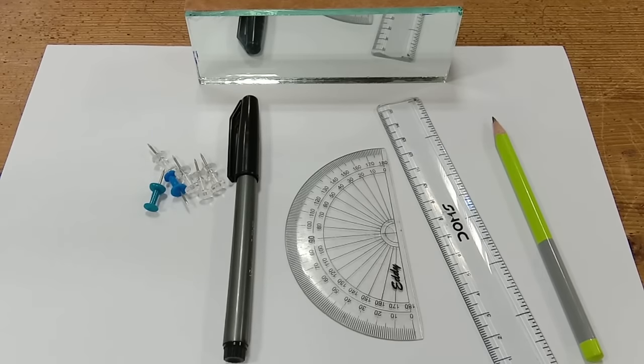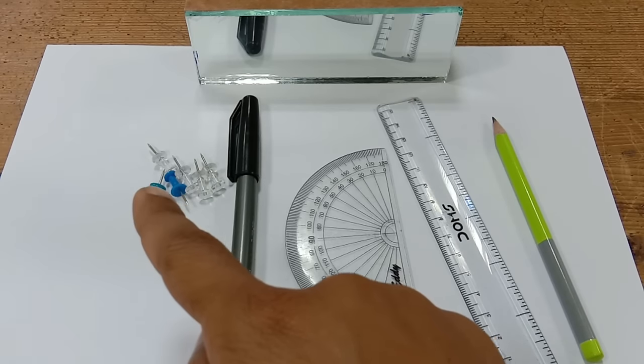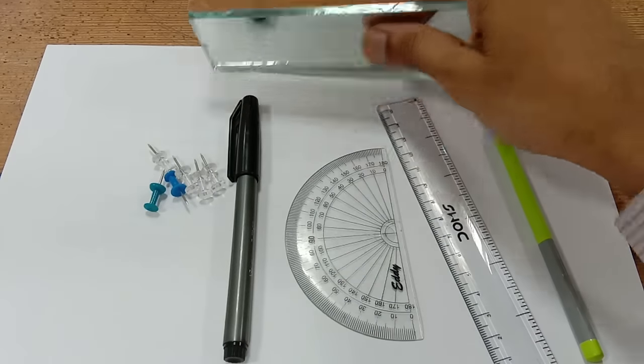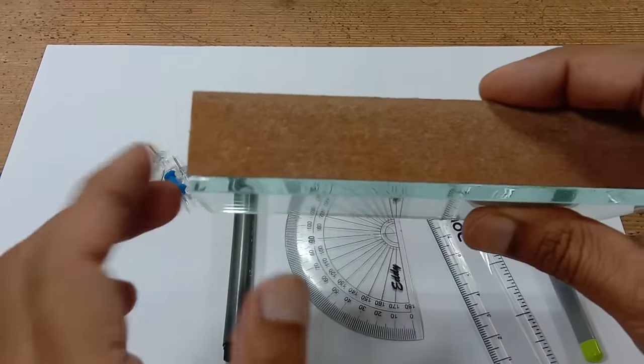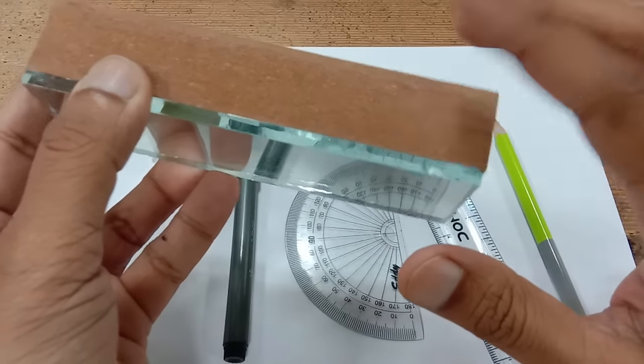A simple experiment to prove the laws of reflection—that the angle of incidence is equal to the angle of reflection. For that I require some basic stationary items, some softboard pins, and a plane mirror. This plane mirror I have attached a wooden block at the back side so that the mirror can stay upright.